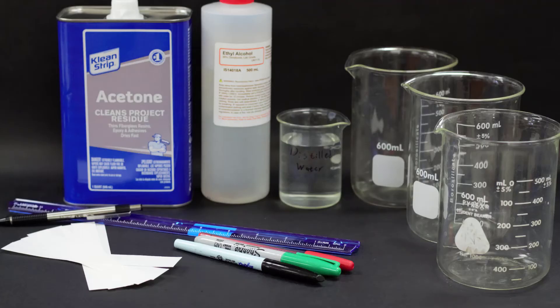For our materials, we'll need to start with distilled water, ethanol, and acetone. Those will be our three solvents, so those will be what you want to look up on Google to try and figure out what the polarity of each one is.